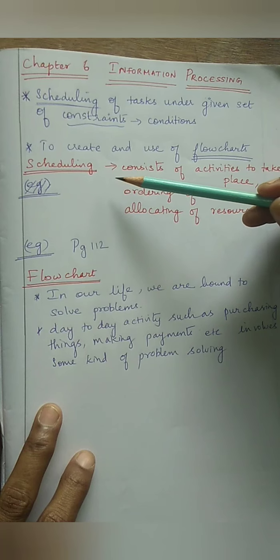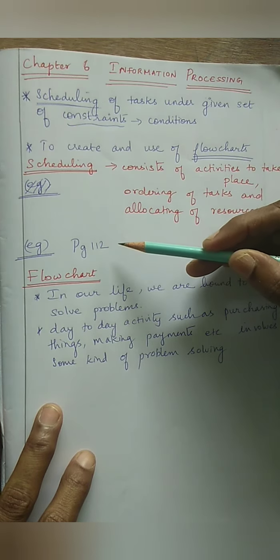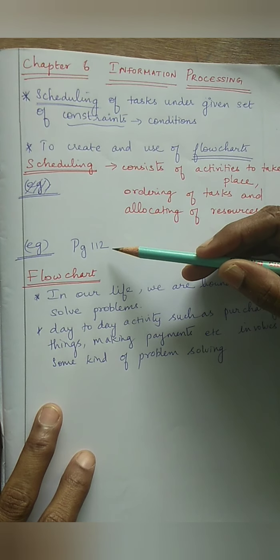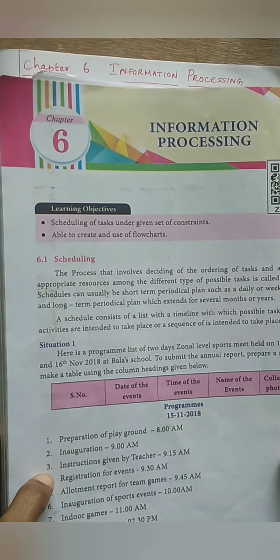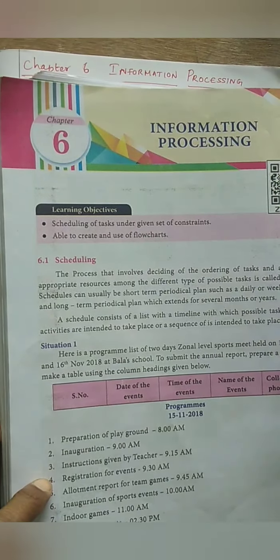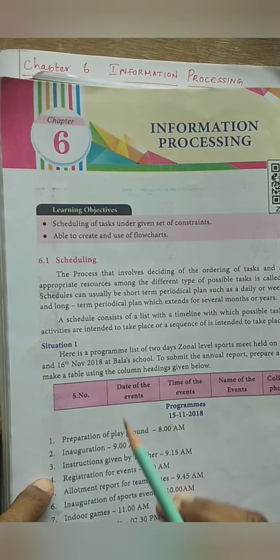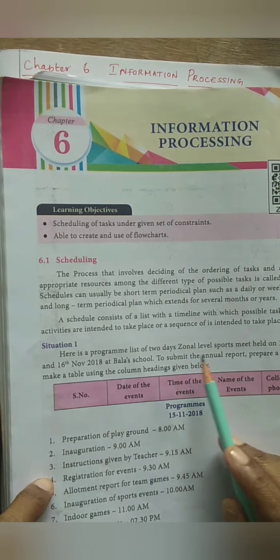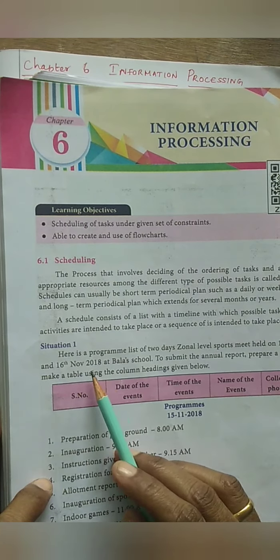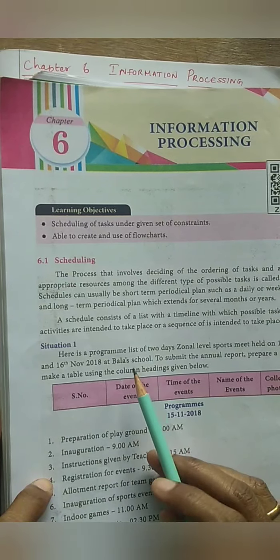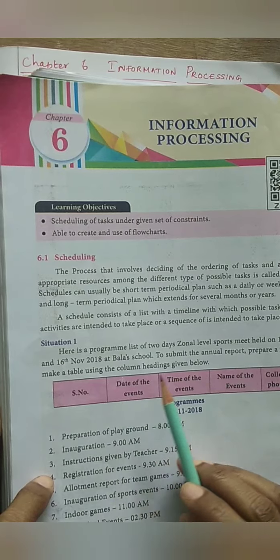To understand in a better way, let me explain scheduling with an example. Take page 112 in your book. There is a situation given there - a program list of a two-day zonal level sports meet held on 15th November 2018 and 16th November 2018 at Bala school.